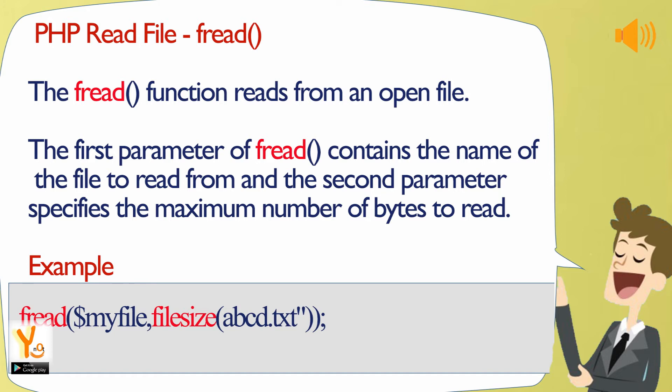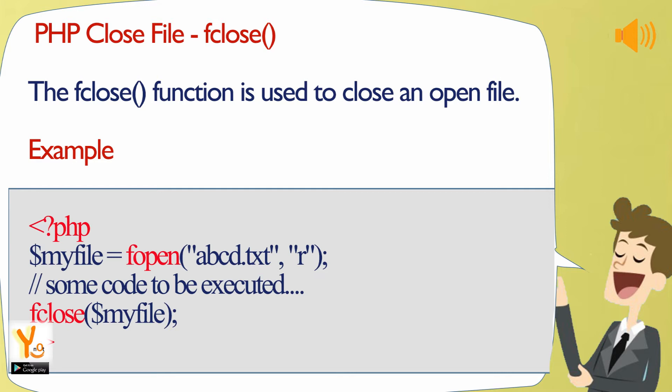The fread function reads from an open file. The first parameter of fread contains the name of the file to read from, and the second parameter specifies the maximum number of bytes to read. The fclose function is used to close an open file.